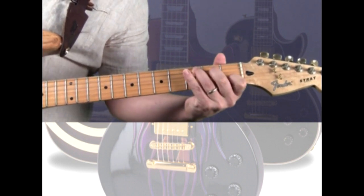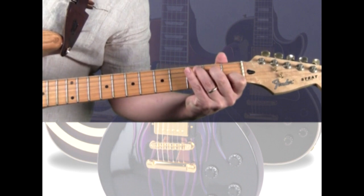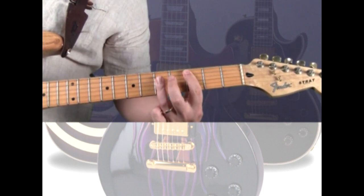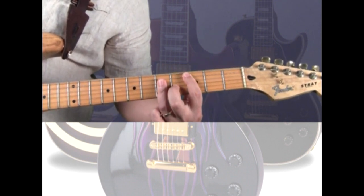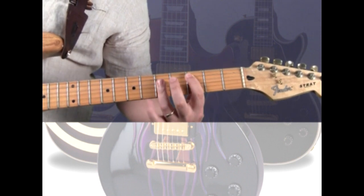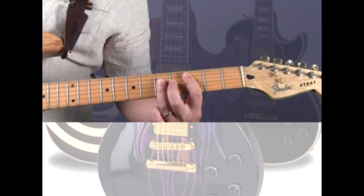For C, you can play an open C chord, but I'm using a standard 5th string bar chord. Index on the 5th string 3rd fret, and bar the 5th fret on strings 4, 3, and 2.